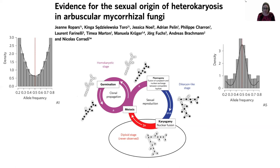I don't think anyone really doubts anymore that AM fungi have a sexual cycle. But the question really is how frequently does it happen in relation to the asexual reproduction of this fine phylum?